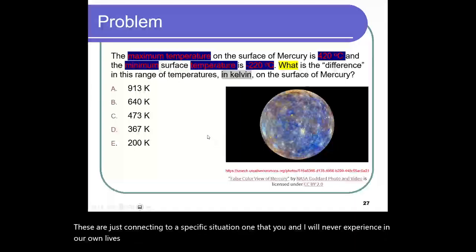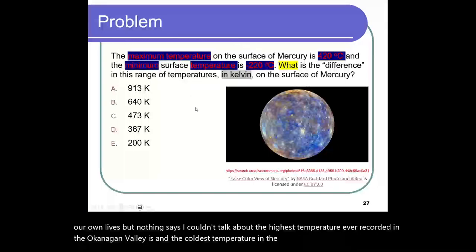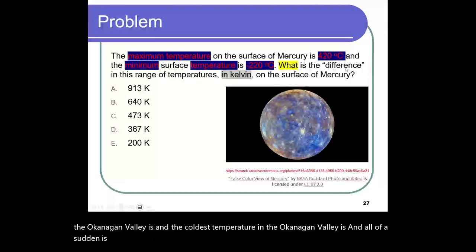But nothing says I couldn't talk about the highest temperature ever recorded in the Okanagan Valley, and the coldest temperature in the Okanagan Valley. And all of a sudden, it's like, what is the difference in this range of temperatures in the Okanagan Valley? And it's the same question.